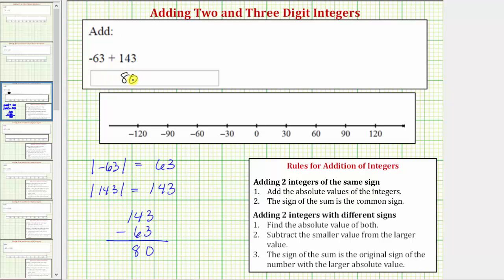And again, this should make sense that the positive 143 is going to outweigh the negative 63, giving us a positive sum.